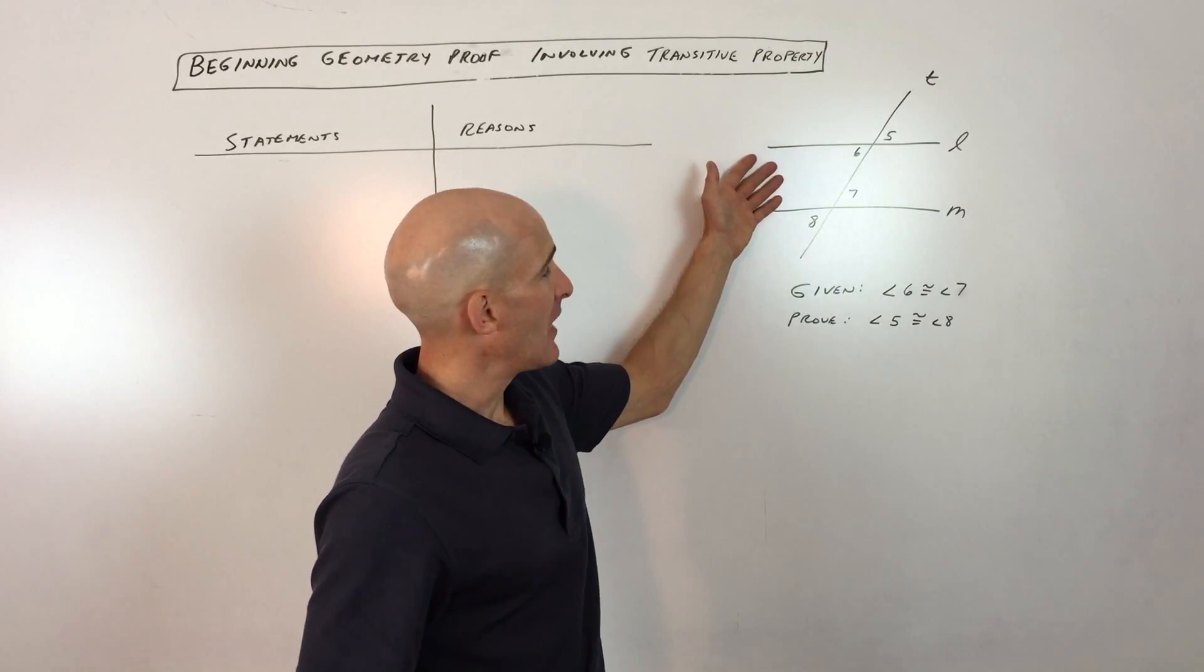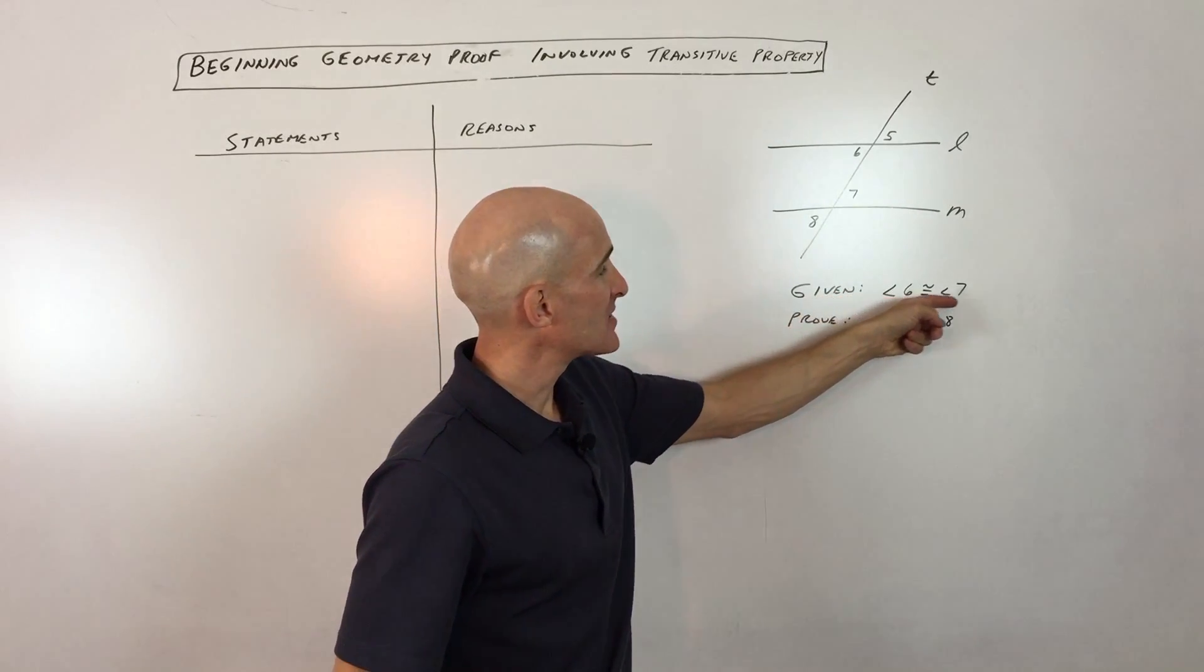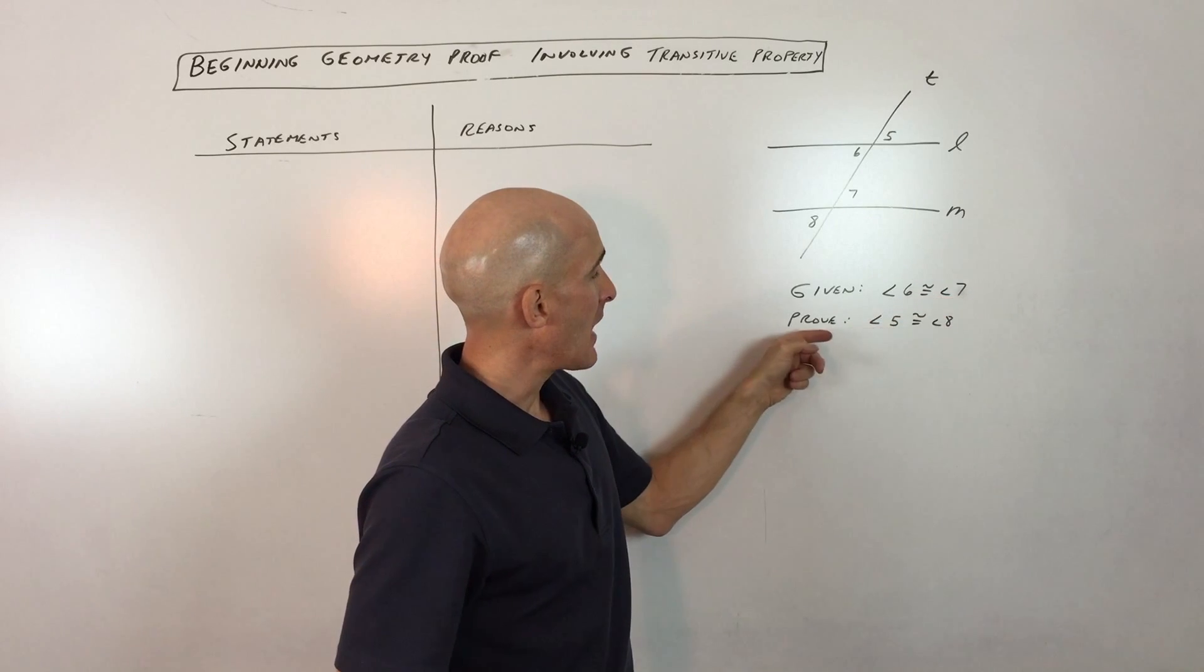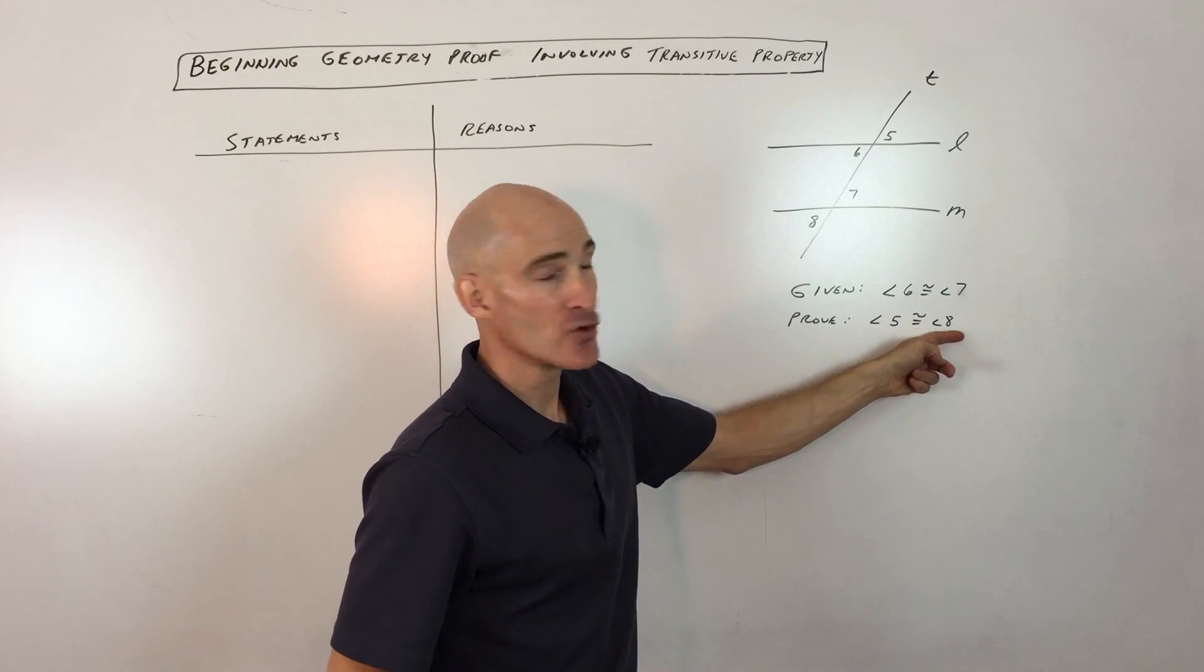So they give us a diagram here and they give us this given that angle 6 is congruent to angle 7 and that we want to prove that angle 5 is congruent to angle 8.